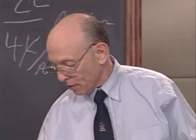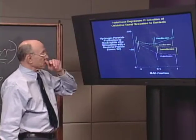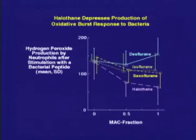Anesthetics and surgery can also compromise the immune system in other ways. For example, the stress of surgery may increase adrenal hormones, or anesthetics may depress the oxidative burst response of neutrophils to bacteria. This slide shows hydrogen peroxide production by neutrophils after stimulation with a bacterial peptide. Desflurane, isoflurane, and sevoflurane do not depress that response — the only anesthetic that does depress it is halothane, though whether that's of any importance we're not really sure.